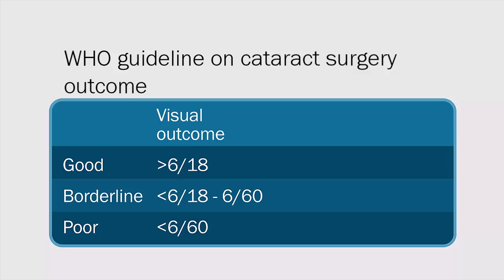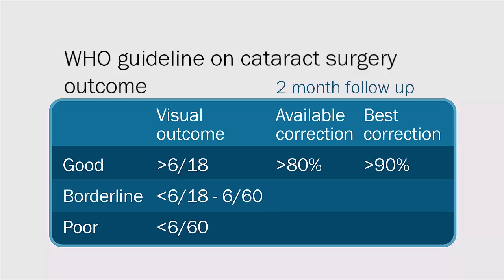Eye units should aim to have good outcomes in over 80 percent of all operated cases at 2-month follow-up with available correction, or 90 percent with best correction. Ideally, borderline and poor outcomes should be found in less than 5 percent of all cases with best correction, or in up to 15 percent of cases with available correction. These guidelines can be applied in high and low volume settings and across static and outreach service delivery models.